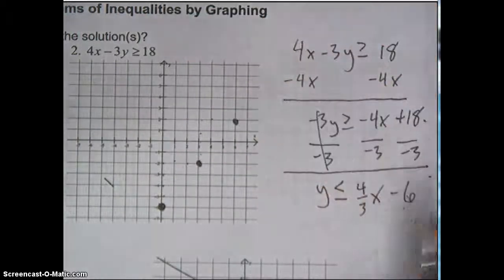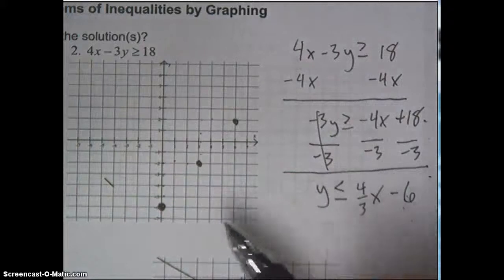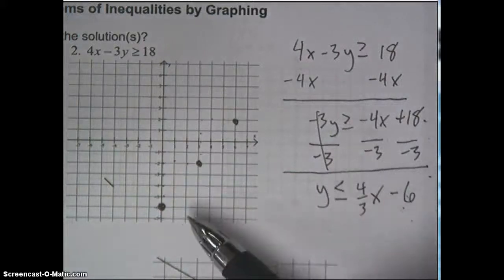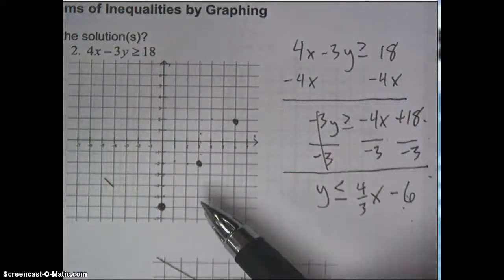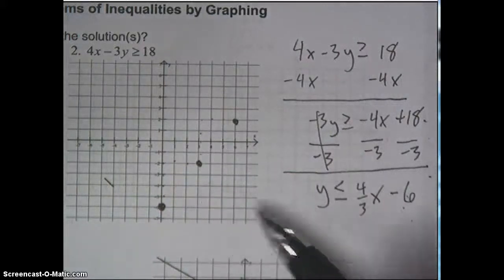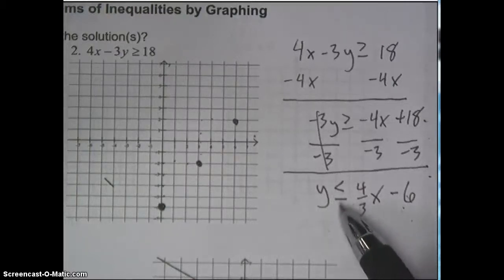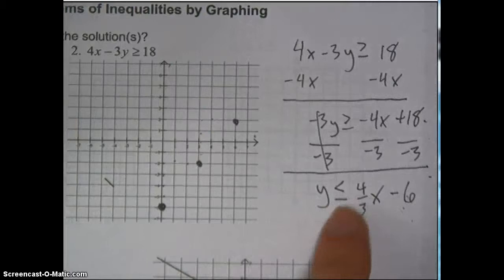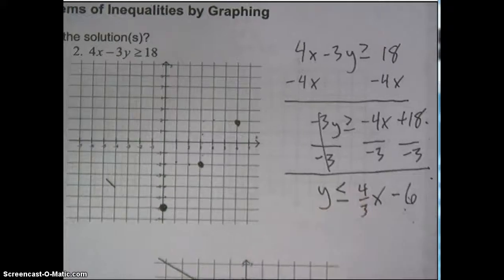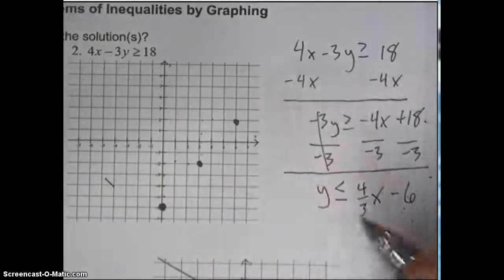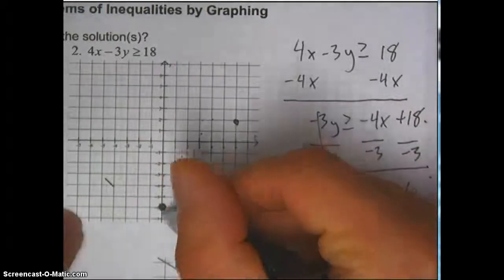Now we can draw this line, but the next thing you've got to ask yourself is: is this a solid line or a dotted line? Your hint is right there — that 'or equal to' bar means it's a solid line. If that bar was not there, I'd be drawing a dotted line. But it's there, so I'm going to draw a solid line as straight as I can.